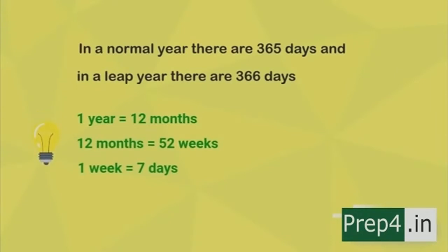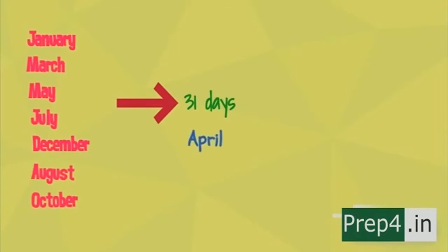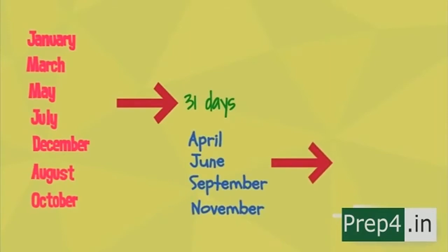Now let's look at the months. January, March, May, July, August, October, and December have 31 days in them. The remaining months — April, June, September, and November — have 30 days. So in total, four months have 30 days and seven months have 31 days.